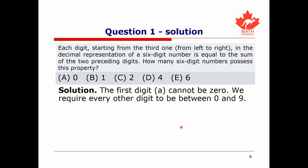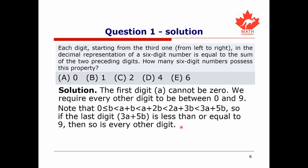Every digit must be between 0 and 9 to actually be a decimal digit. Also notice that each digit is less than the next one: B < A+B < A+2B < 2A+3B < 3A+5B. So if we want all digits to be at most 9, it's sufficient to just require that 3A plus 5B is less than or equal to 9, since all other digits are smaller.